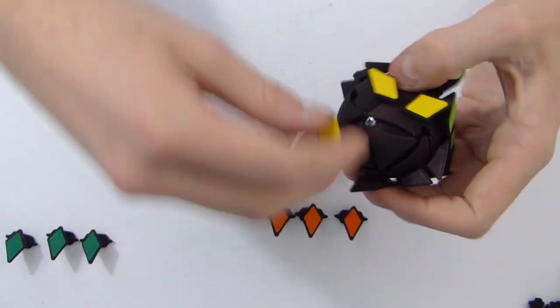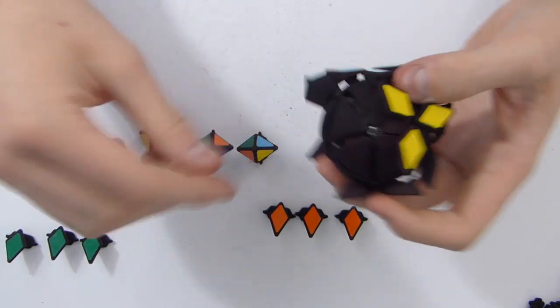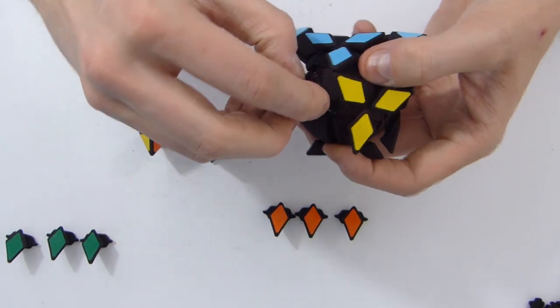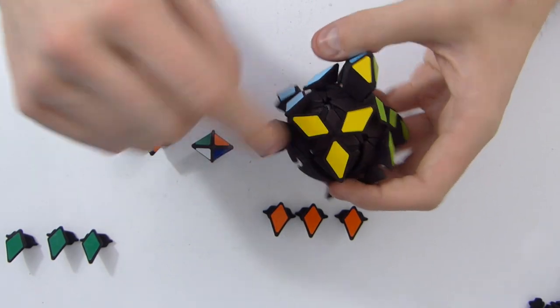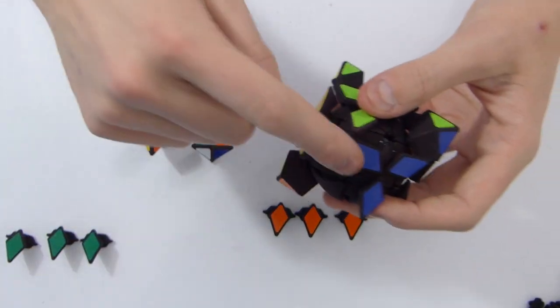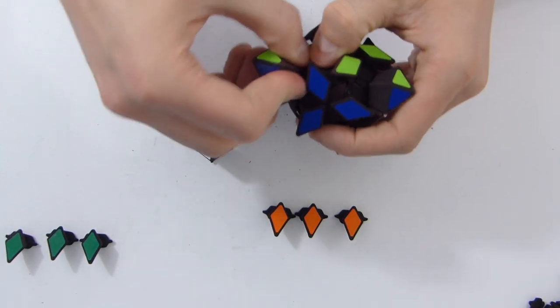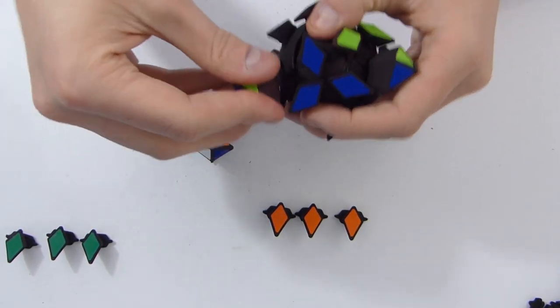So, this is actually quite easy for now. Now, I've got the blue, yellow, light blue, yellow Starminx edge, that goes here. And the dark blue, light green, yellow, which is this one. So, it goes here. I'm going to slide it in, because sliding it in is always easier.